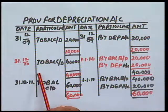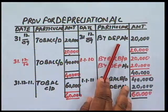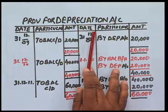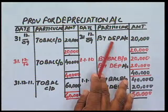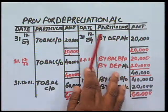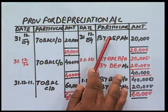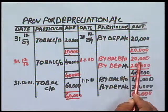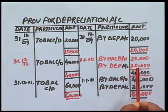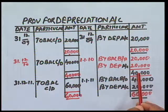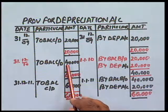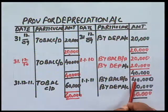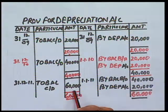In the provision for depreciation account, when we charge depreciation, we post it to the credit side. So the entry is: depreciation account debit to provision for depreciation. The closing balance at end of year 1 is 20,000, which becomes the opening balance in year 2. Again depreciation of 20,000 is charged, making the total provision 40,000 at the end of year 2. At the beginning of year 3, 40,000 is the opening balance, and after charging 20,000, the closing balance of provision for depreciation is 60,000.